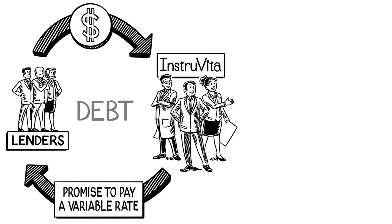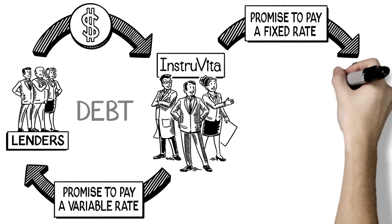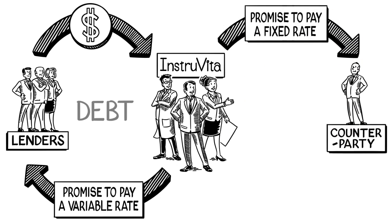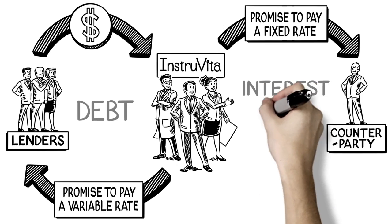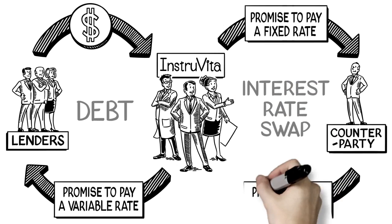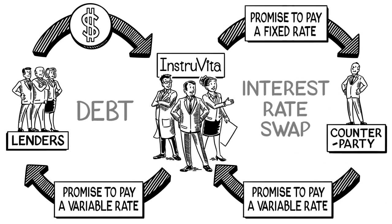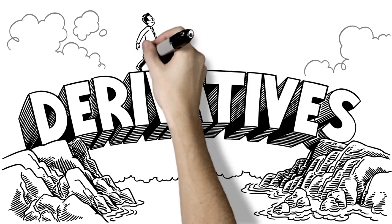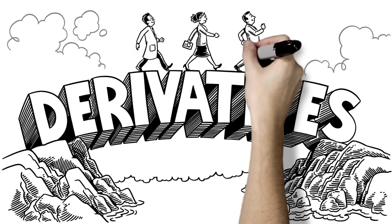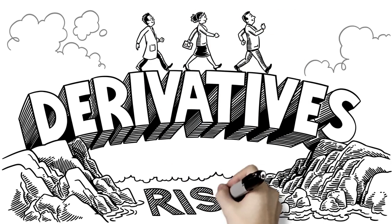The company has found a solution. It can use derivatives to lock in the cost of financing. In this case, an interest rate swap would allow Instravita to exchange its floating rate payments for fixed rate. That's just one example of how derivatives help companies manage risk.